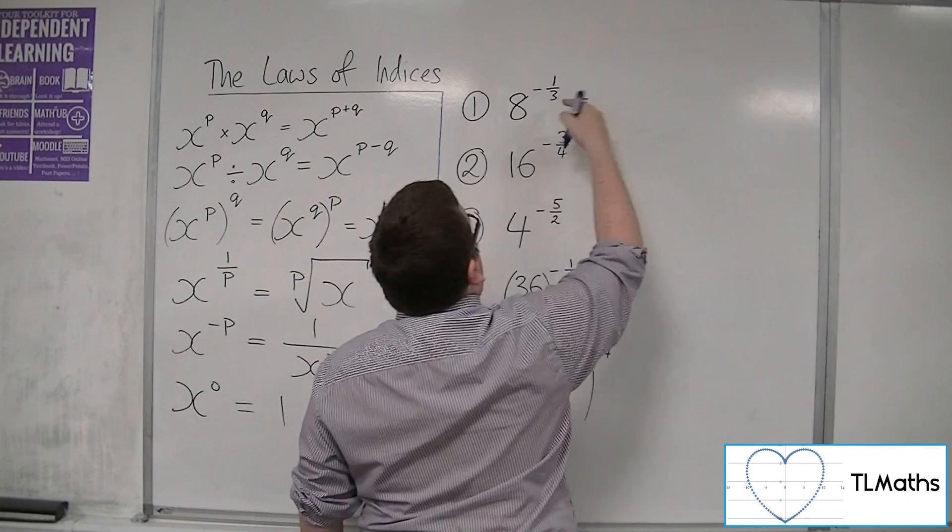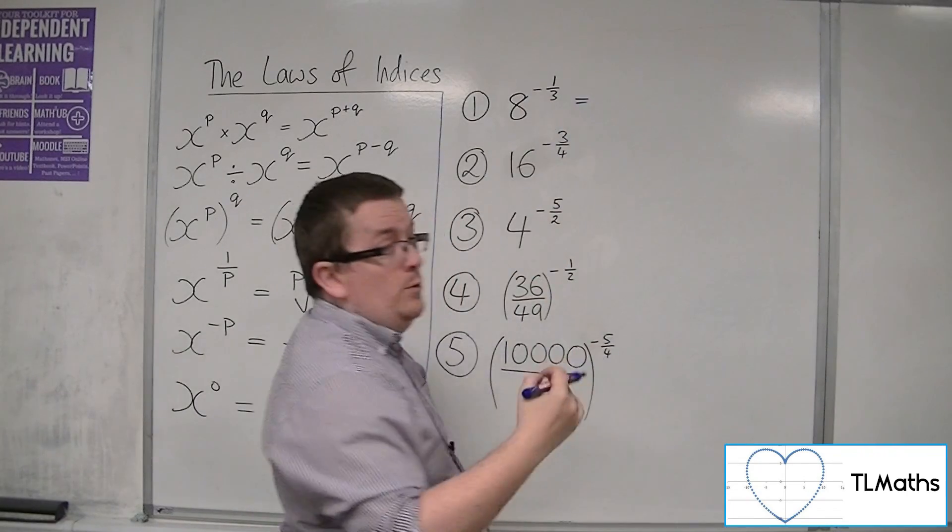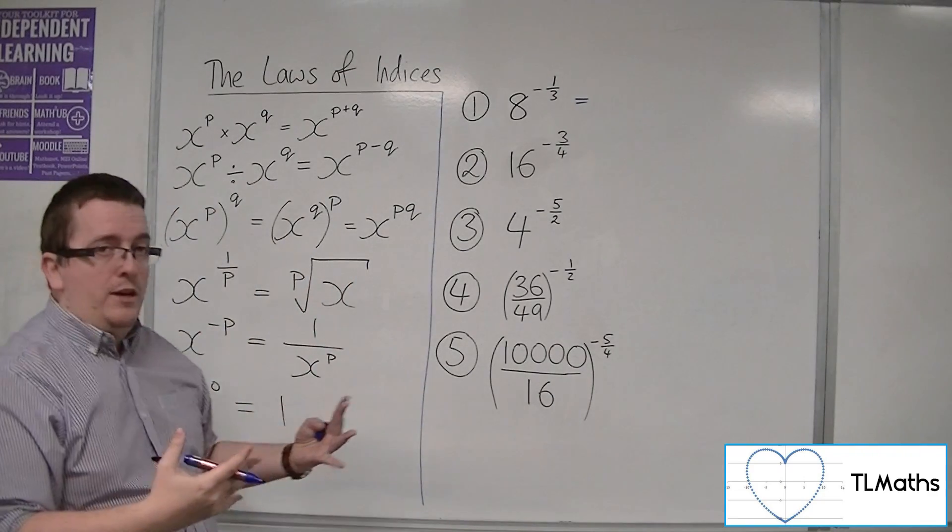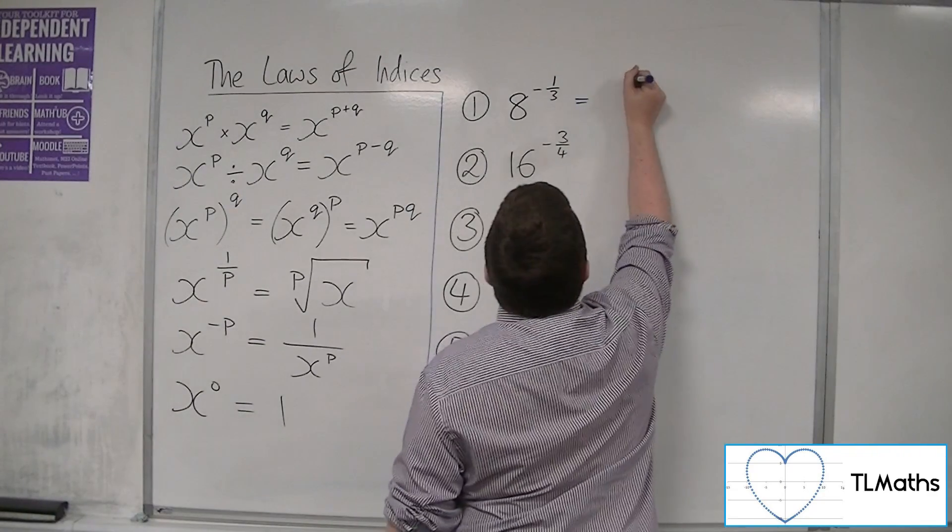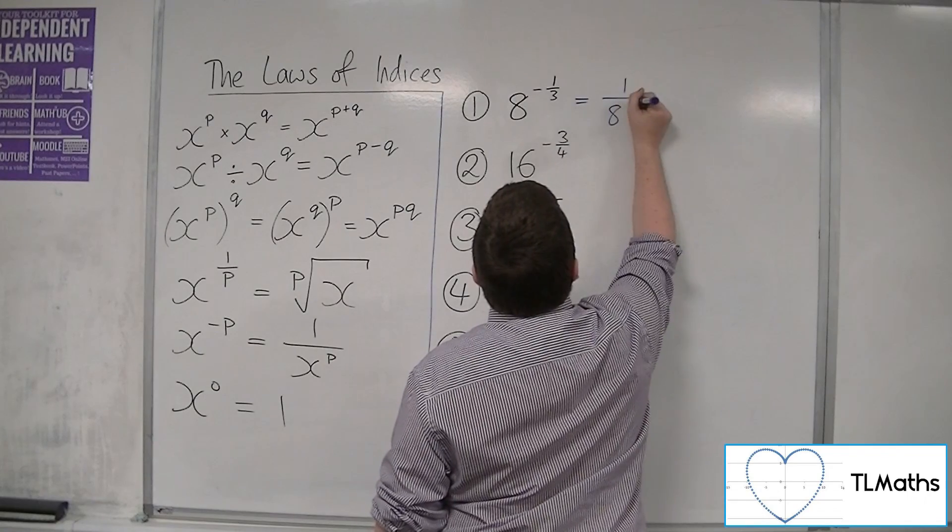So first things first is that negative. I always deal with the negative sign first before I deal with the fraction. Because I know that that's going to be 1 over 8 to the third.